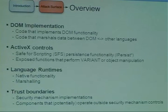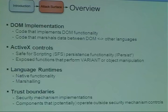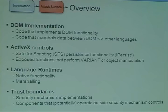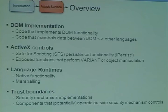Looking at the attack surface, there's quite a lot to attack. First, there's the DOM implementation itself — the code implementing DOM functionality in MSHTML is a large code base. There are ActiveX controls, and although they've been targeted a lot in the past, the instantiation and iPersist stream stuff has been targeted very little. Most work has targeted the scriptable interface. You've also got language runtimes — both native functionality and marshalling code — and trust boundaries, which are where security mechanisms are implemented and where they start trusting other objects.